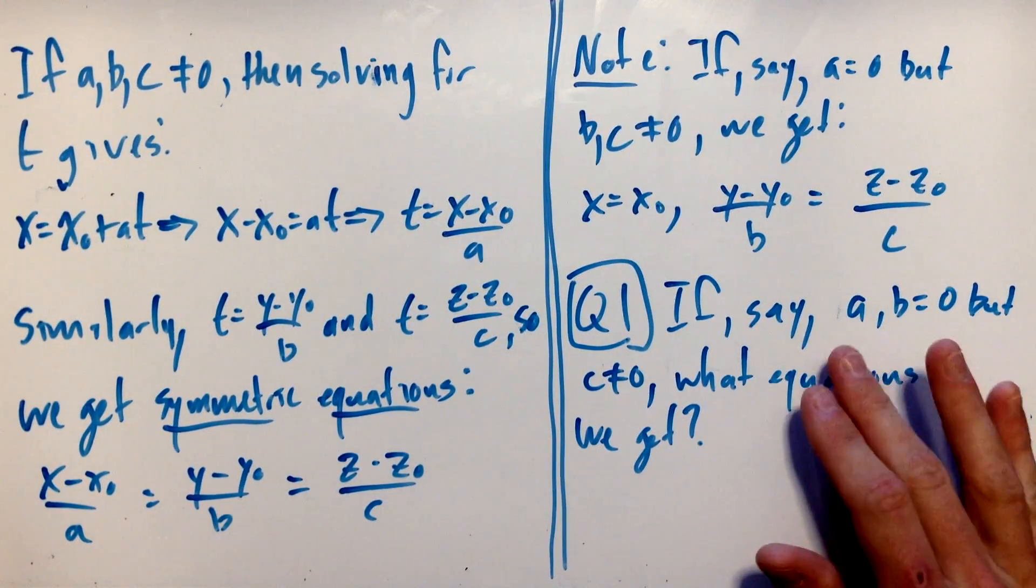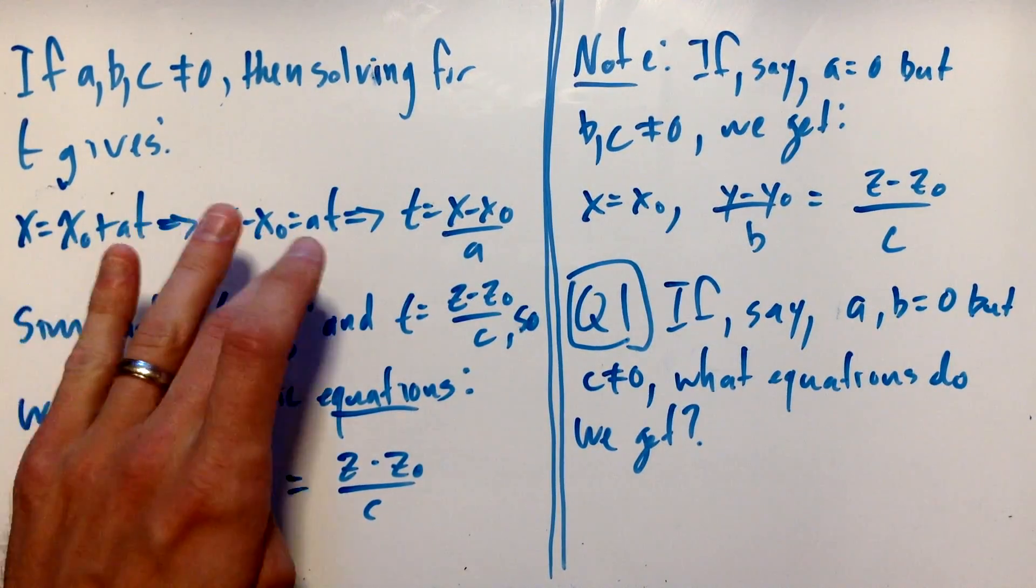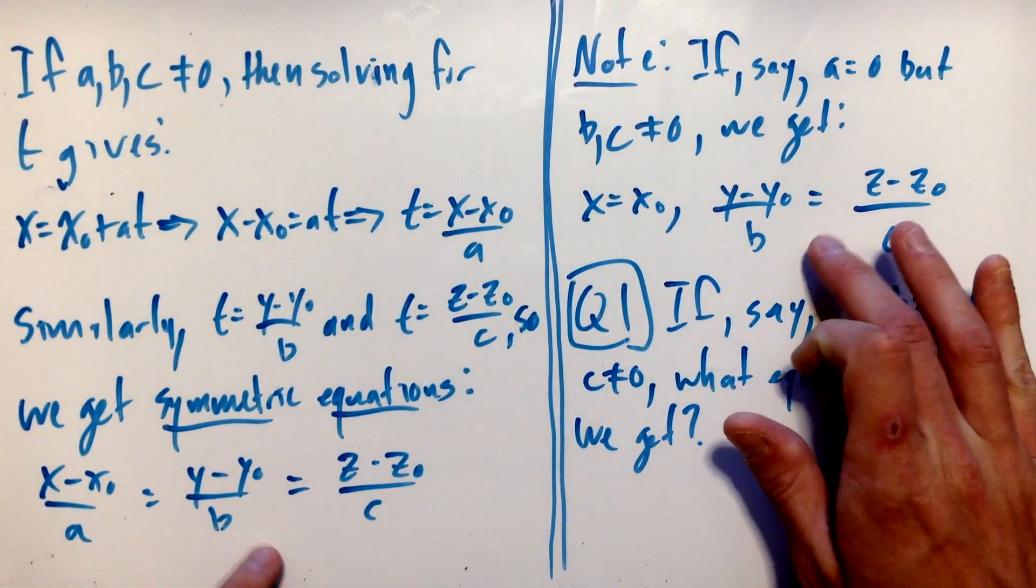However, here's question one. Suppose that both a and b are zero, so x = x0 and y = y0, but c is non-zero so that z = z0 + ct where c is non-zero. What equations do we get that are analogous to these things?